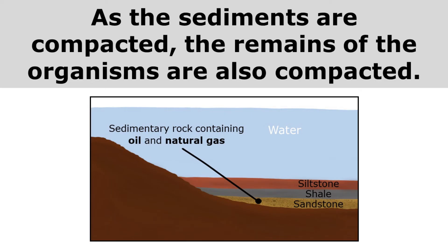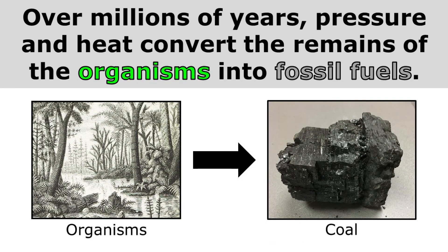As the sediments are compacted, the remains of the organisms are also compacted. Over very long periods of time, the sediments are turned into sedimentary rock and the remains of the organisms are turned into fossil fuels. Over millions of years, pressure and heat convert the remains of the organisms into fossil fuels.